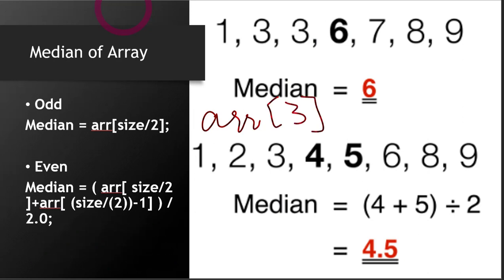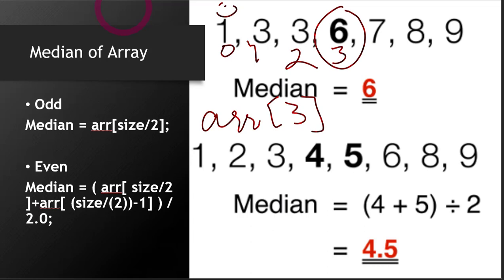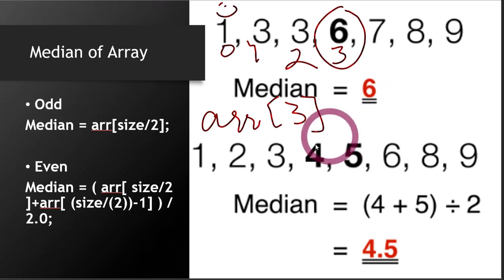What is there at the third index? This is the 0th index, then one, two, three. So this element is at the third index, and that is the median of this array.